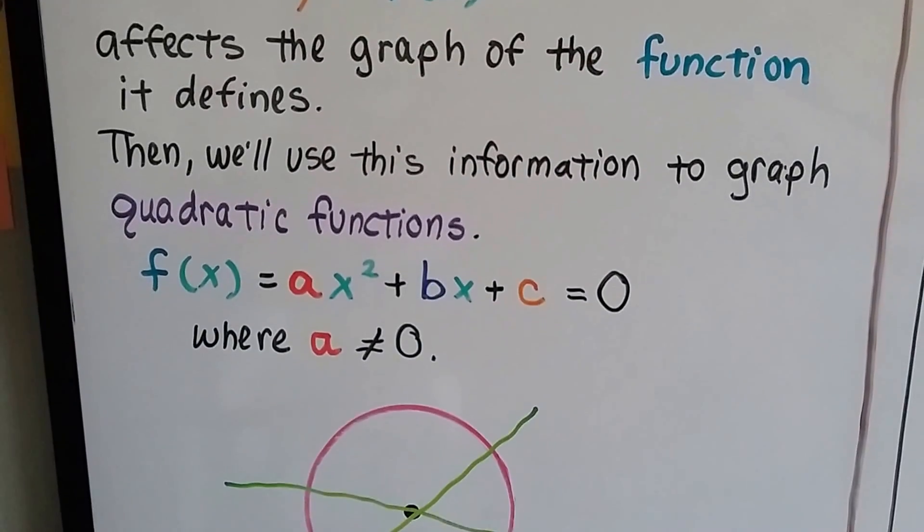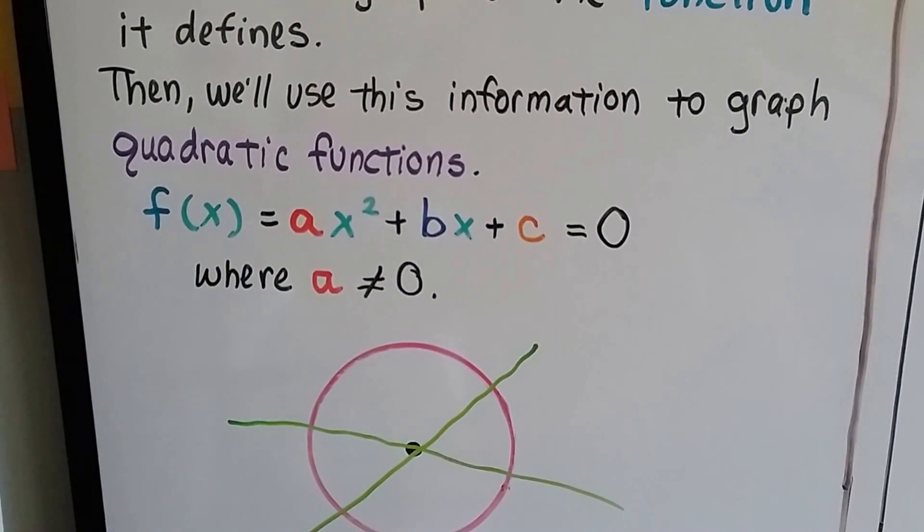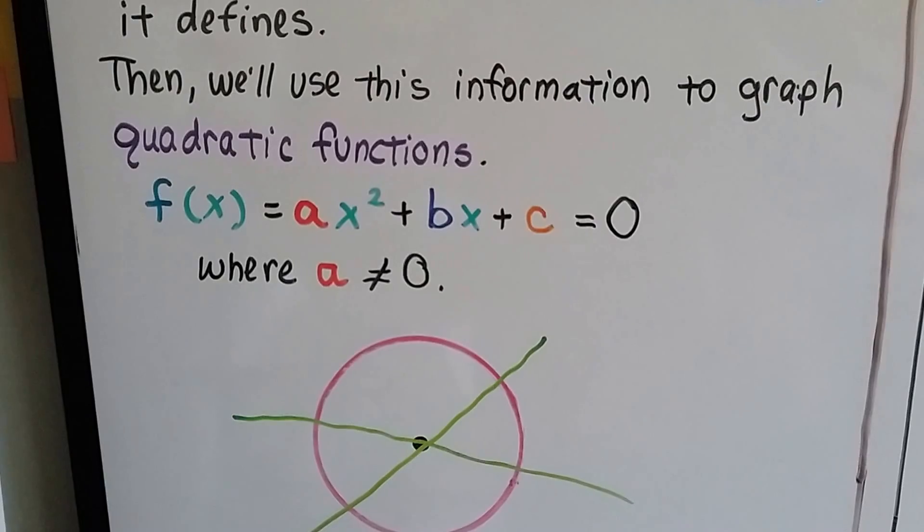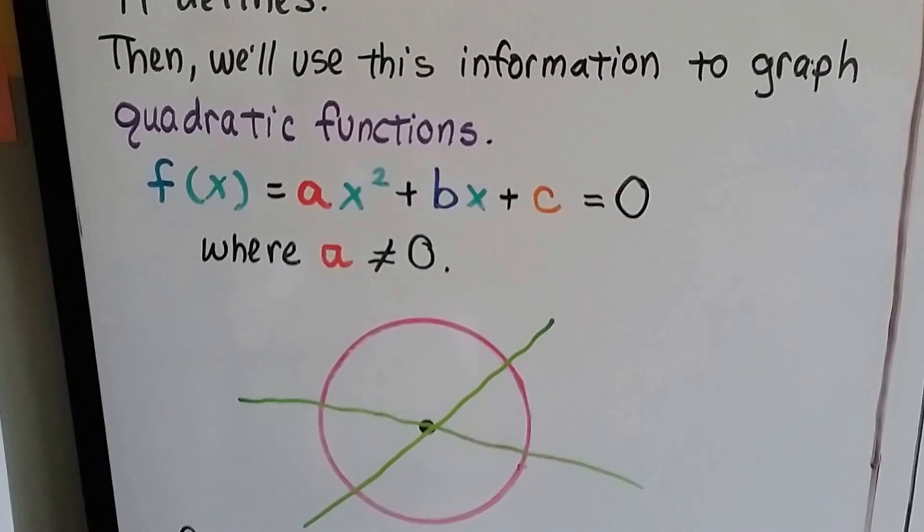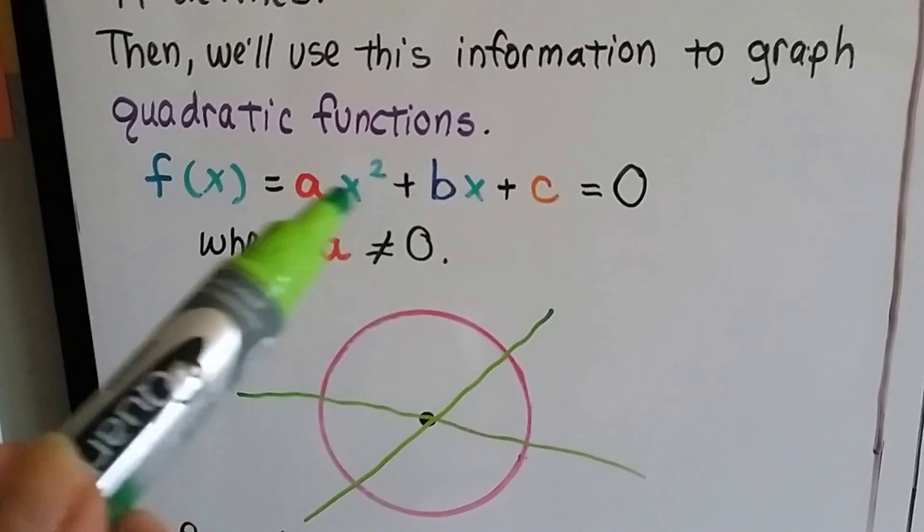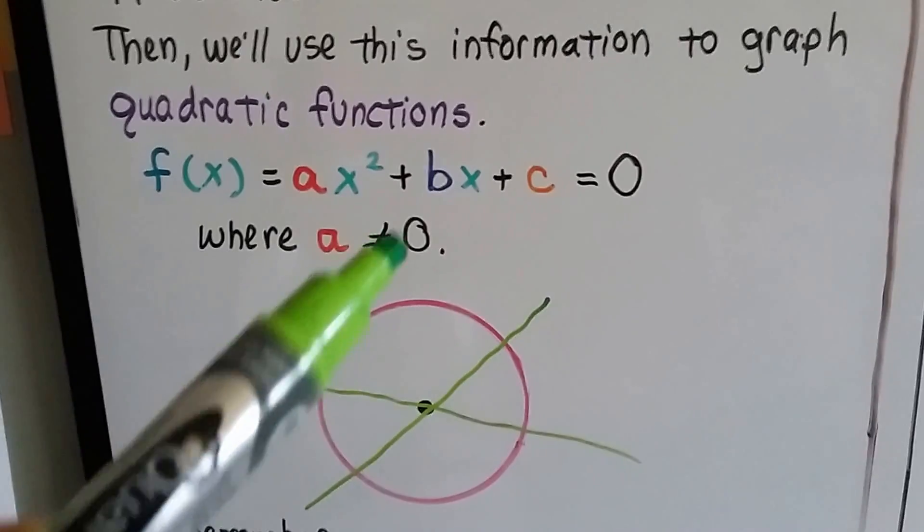Then we'll use this information to graph quadratic functions. The function of x equals ax squared plus bx plus c equals zero. So here's the function of x and here's our quadratic equation. As long as a doesn't equal zero.